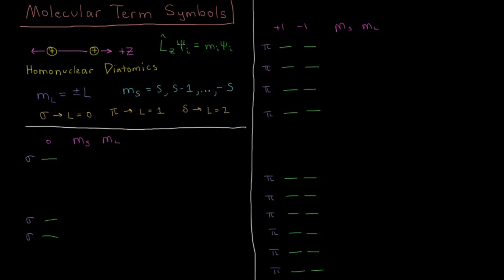For each individual orbital, psi being an orbital, these orbitals are going to be eigenfunctions of the Lz operator — the angular momentum around the internuclear axis. That operator acting on an orbital gives us the eigenvalue m sub l times that orbital. The only difference from atoms is the restriction on values of capital L: instead of going from L to minus L by all integers, the only values allowed are plus or minus L. As for total electron spin, capital S, that is the same as for atoms — m sub S goes from S to minus S by integers.